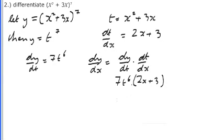Multiplying these together and substituting for t. Now let's keep in mind, t is x² + 3x. We put the power 6 as before. And with our expression for dt/dx, 2x + 3.